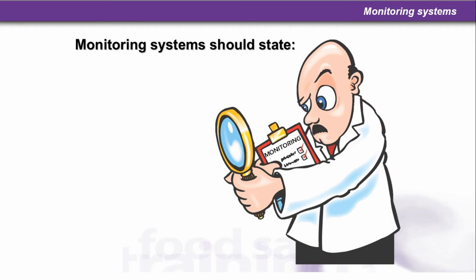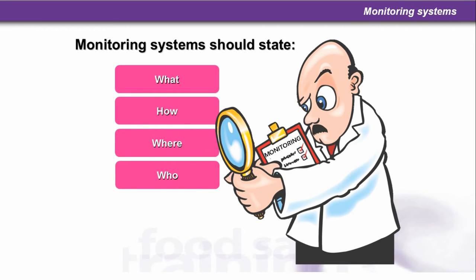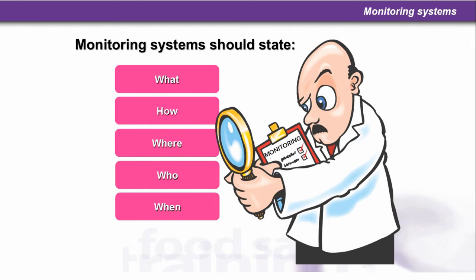Monitoring systems should state: what needs to be monitored, how it's going to be monitored, where, who's going to monitor, when it's going to be monitored, and the need for microbiological testing.